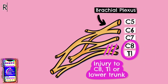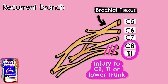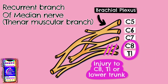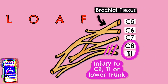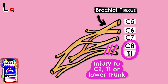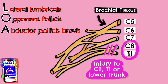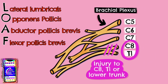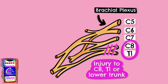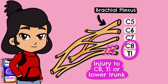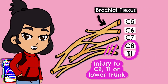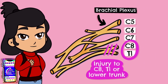It is high yield knowledge that the recurrent branch of the median nerve supplies the so-called LOAF muscles: Lateral two lumbricals, Opponens pollicis, Abductor pollicis brevis, and Flexor pollicis brevis. The deep branch of the ulnar nerve supplies everything else, like the interossei, the hypothenar eminence and the rest of the lumbricals.